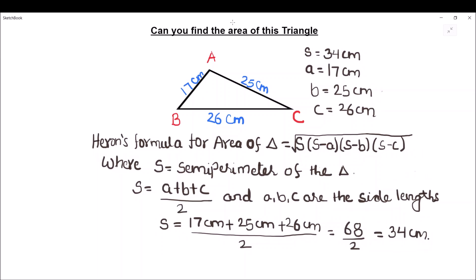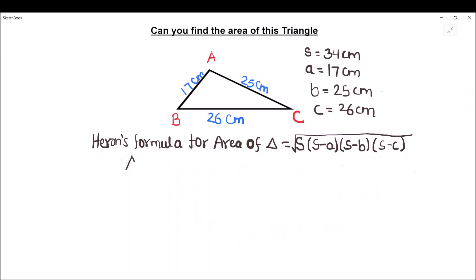Let me erase this so that we can find the area. So area of triangle is equal to square root of s, which is 34, times (s minus a), 34 minus 17, times (s minus b), 34 minus 25, times (s minus c), which is 34 minus 26.